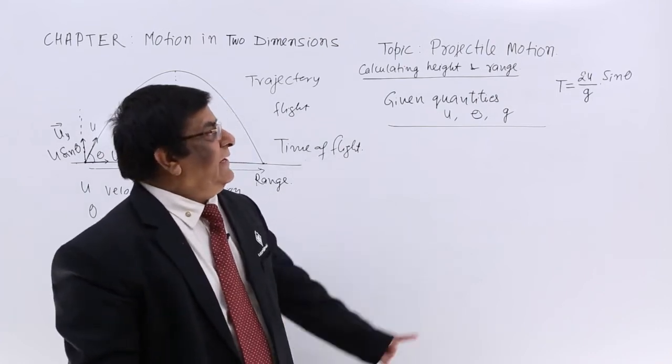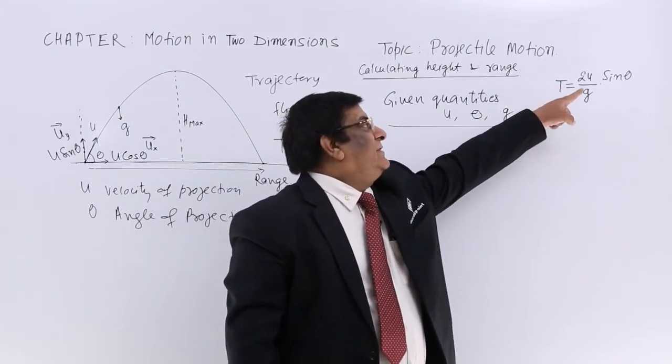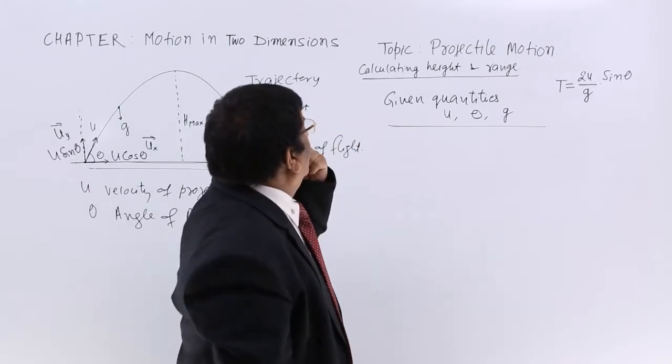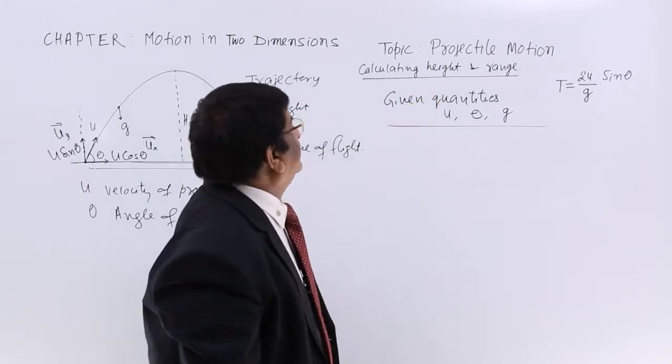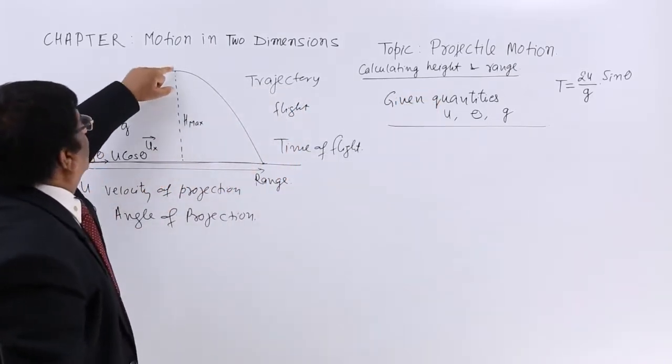We have calculated time of flight, which is 2u sin θ / g. Now we want to calculate the maximum height.